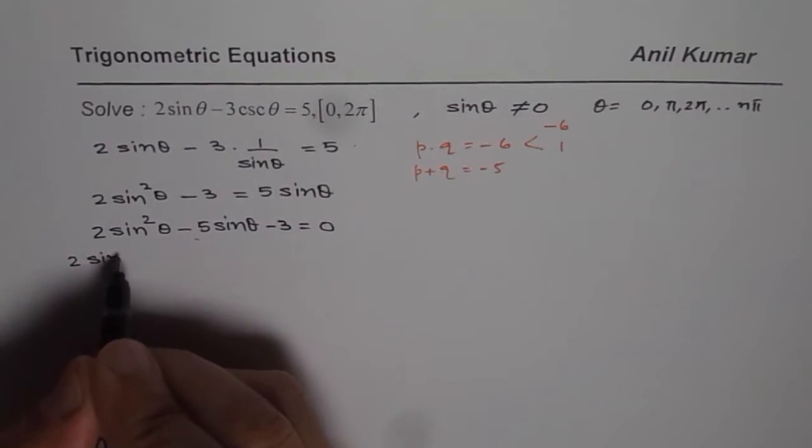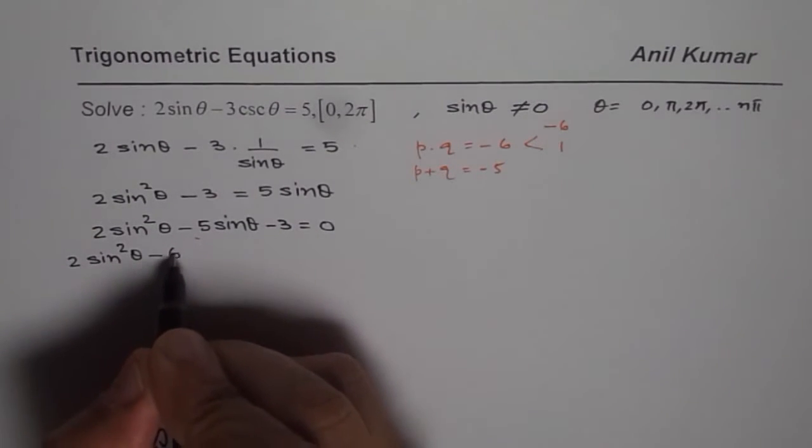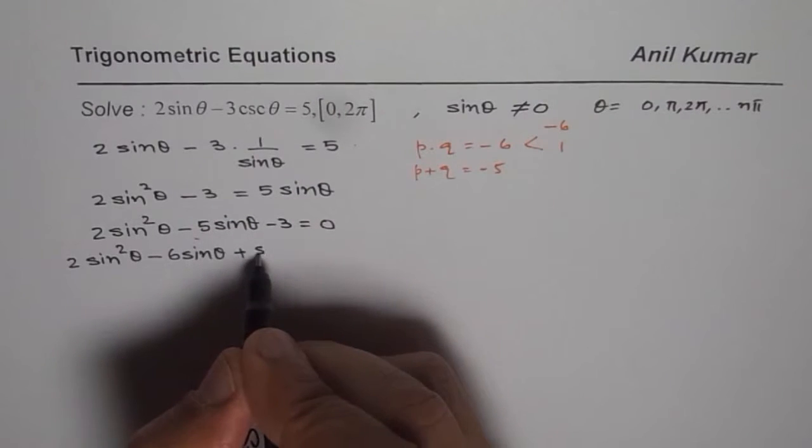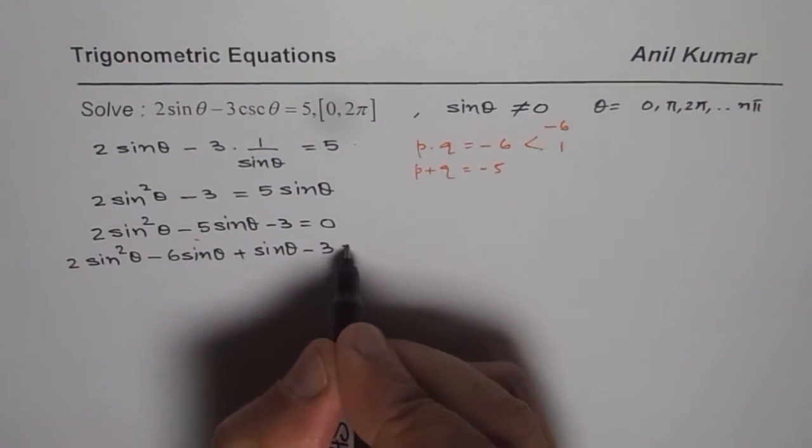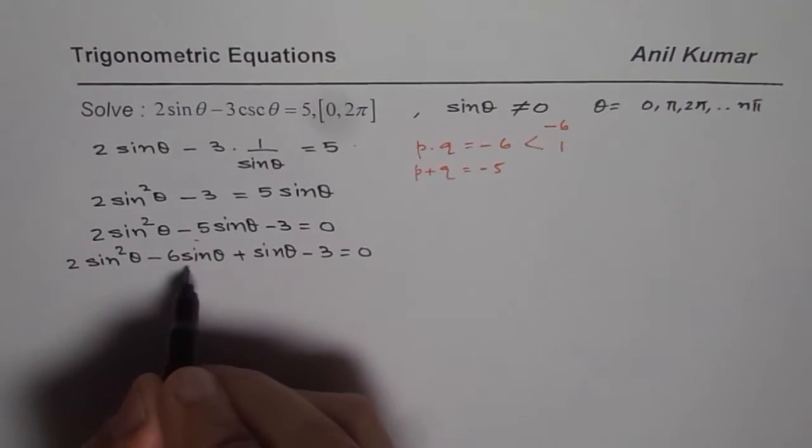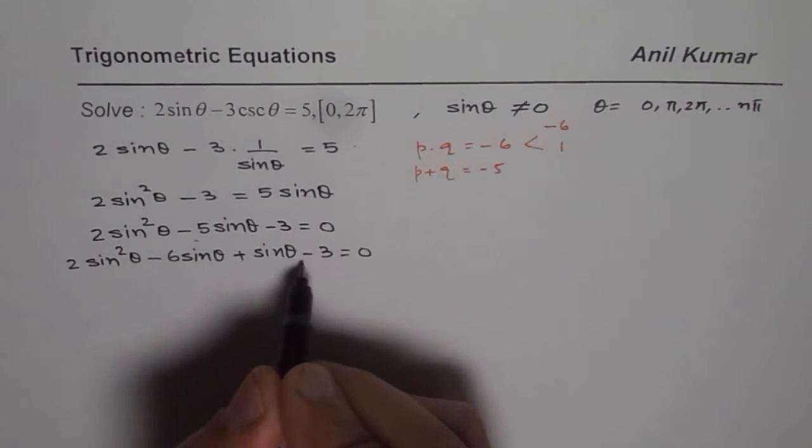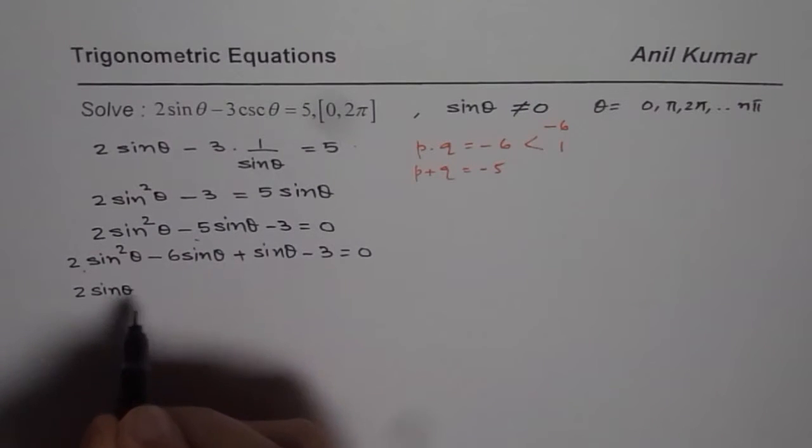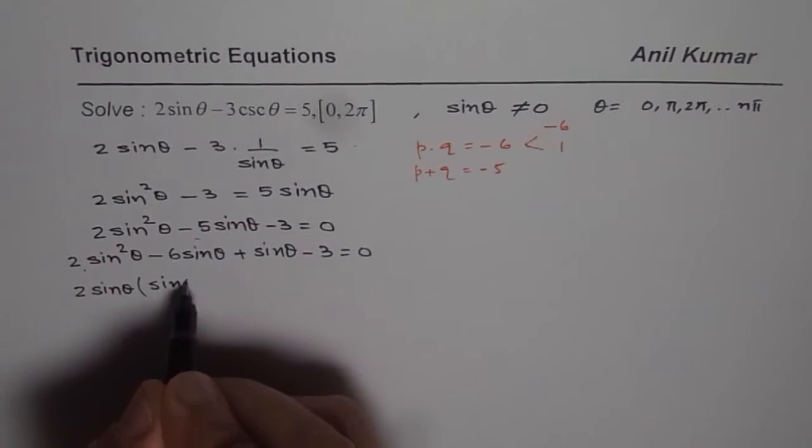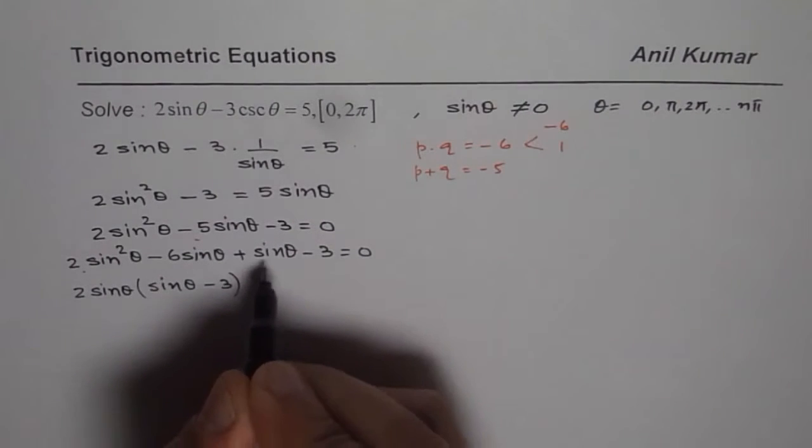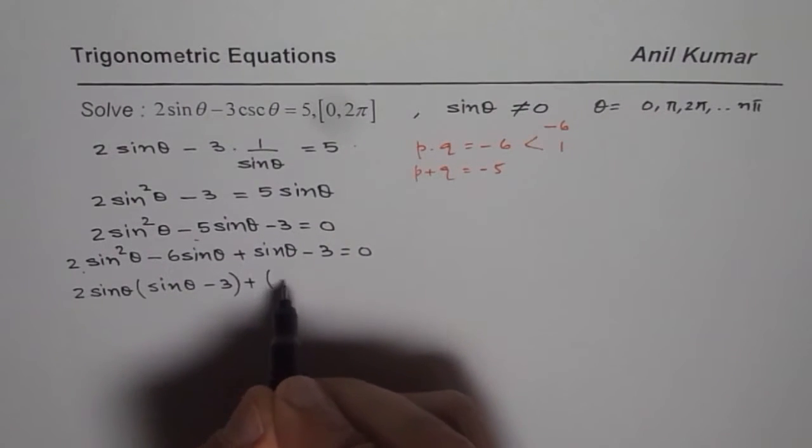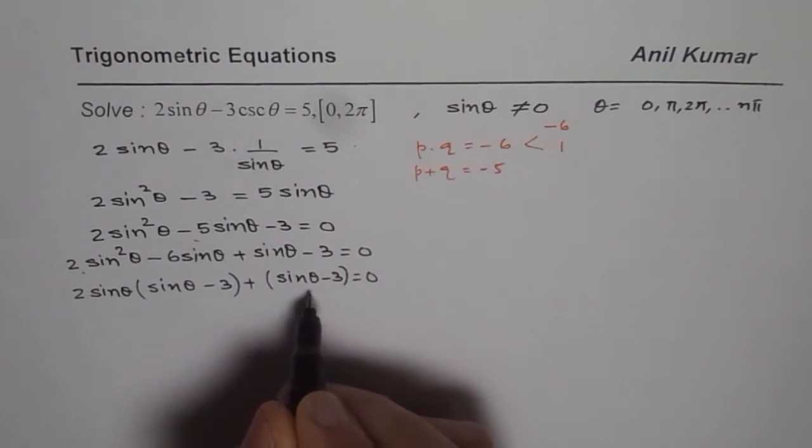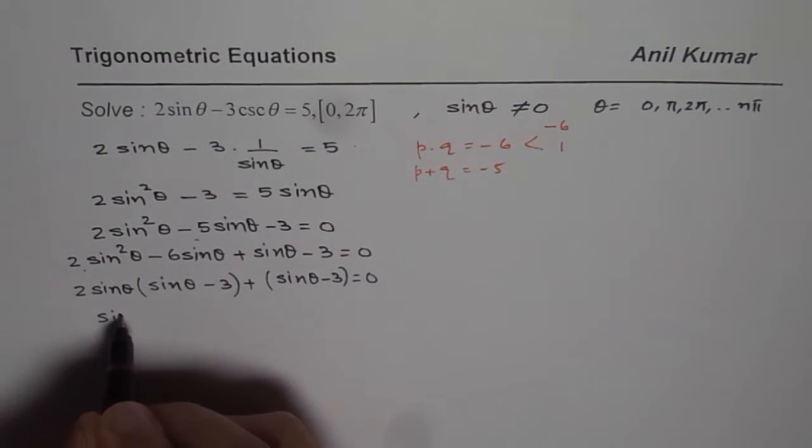We have 2 sin square theta minus 6 sin theta plus 1 sin theta, that means sin theta minus 3, equals to 0. Now let's factor forming combinations of 2. So from the first two terms we can take 2 sin theta common. We get sin theta minus 3 and here we have plus sin theta minus 3. 1 is common here. Now sin theta minus 3 is a common factor.